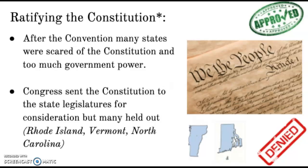What is the guarantee that you, the individual, are protected from your government — from the federal government and the state government? The idea that the Constitution was so powerful really scared a lot of people, because it sounded like you were giving all the power to the government again. The Articles of Confederation wanted to protect from that, because of the Revolution and England. So Congress sent the Constitution to the states, but there were states that said no.